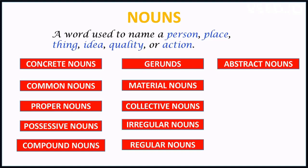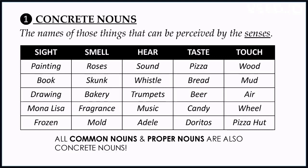You can see on the screen that there are a total of 11 types of nouns. I will quickly go through each of them and tell you in brief what they mean. So let's get started. Number one: concrete nouns. These are those nouns which we humans can perceive by our senses.